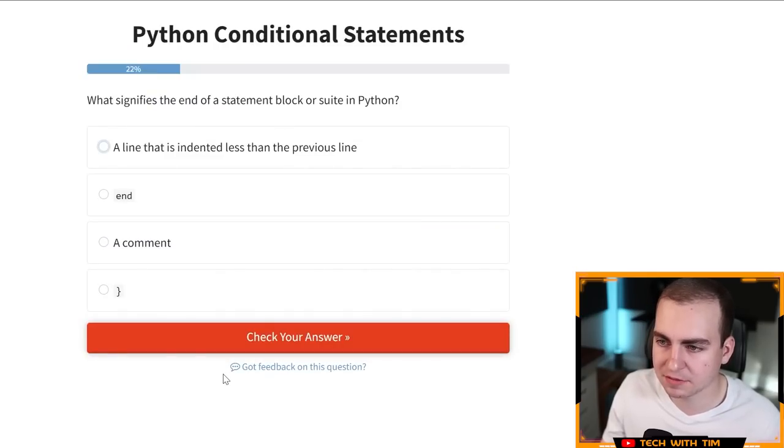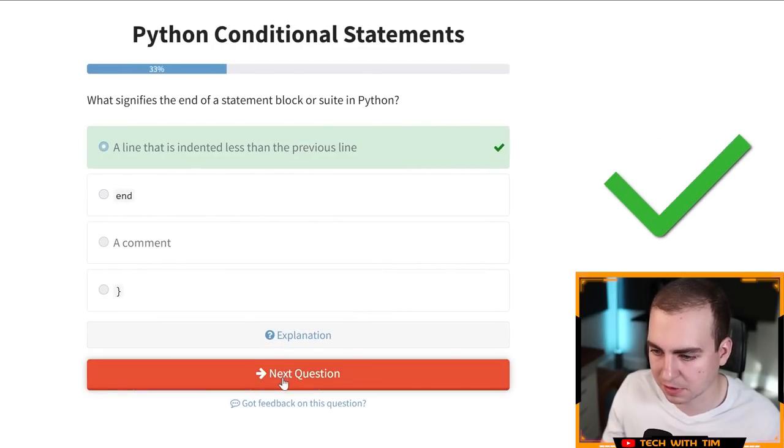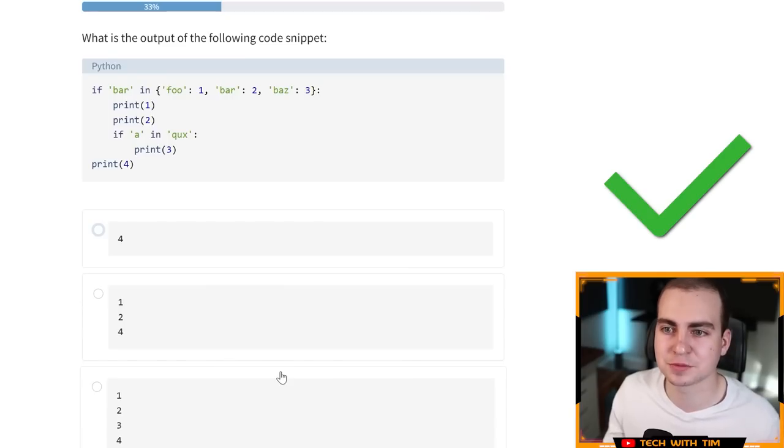Next. What signifies the end of a statement block or suite in Python statement block or suite, a line that is indebted in less than the previous line, not end, not a comment, not that. So yeah, it's going to be that. Okay. Much easier, much, much easier already. Although I don't want to speak too soon.